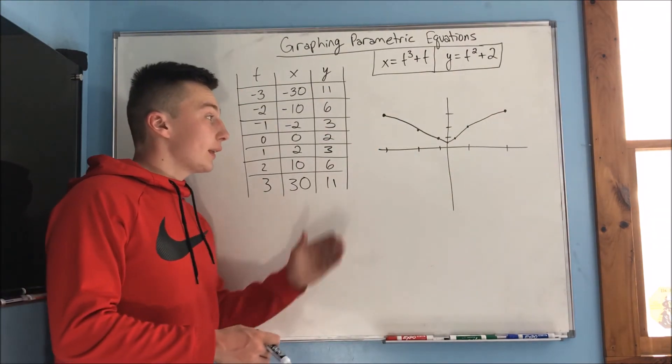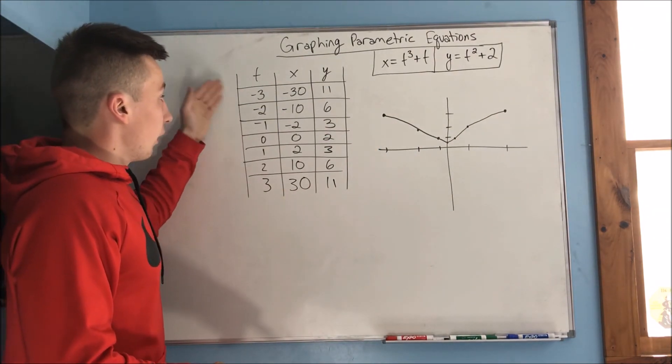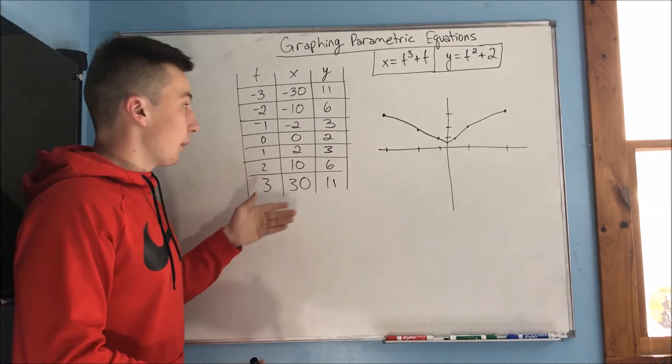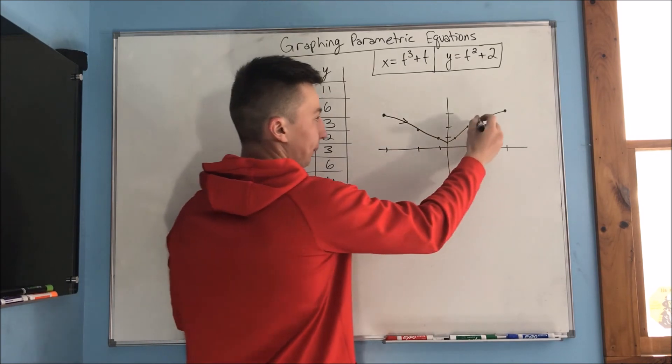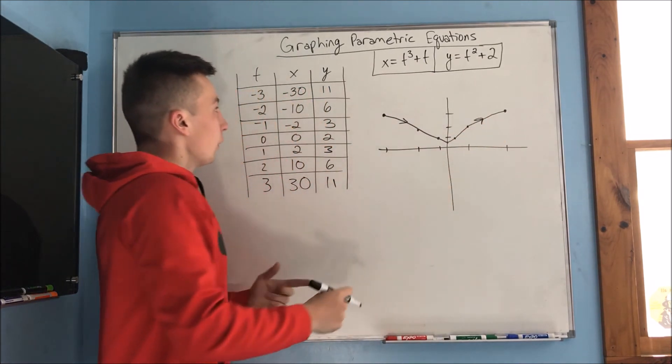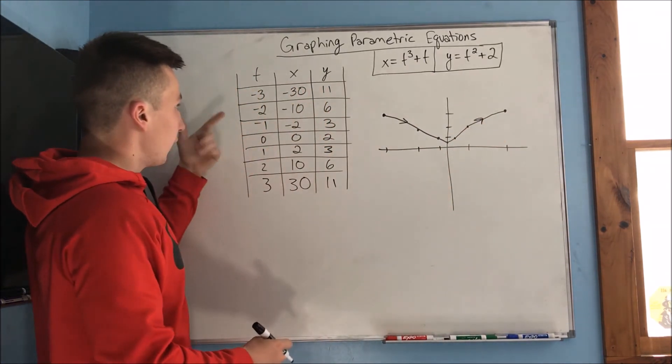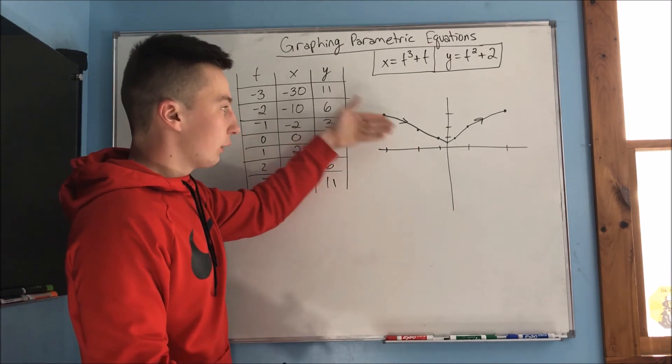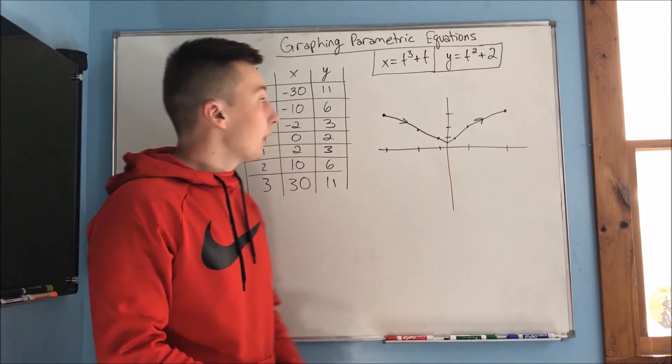So now we need to give this graph direction. So as time increased, which way did we go on this curve? Well, as time increased, we ended up going this way. We had, let's say from negative 3 to negative 2, this was our time equals negative 3 point. This was our time equals negative 2 point. So as time increases, we're going to go this way. Alright, so that's going to do it for this video. So if this video helped you, make sure to leave a like and subscribe by clicking my icon in the top left. You can also view the playlist for Parametric and Polar in the next video in the series. See you soon.